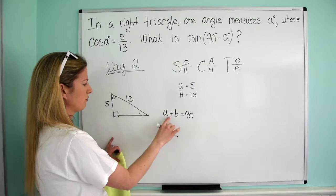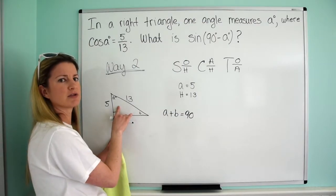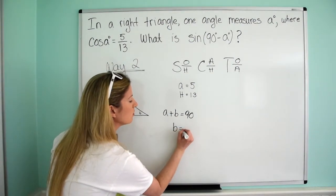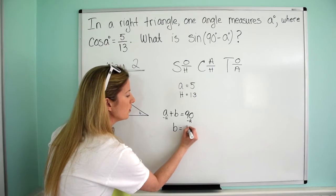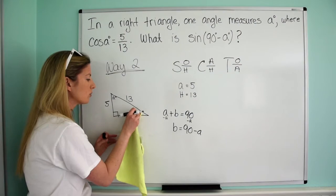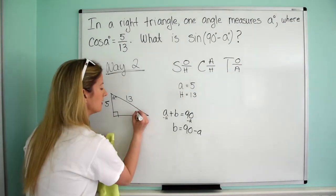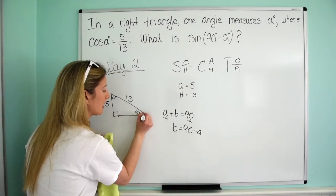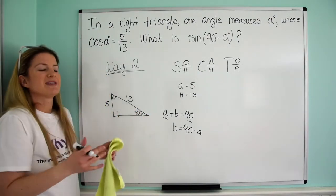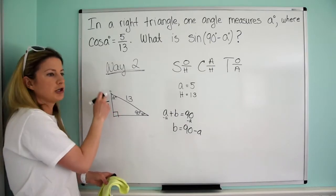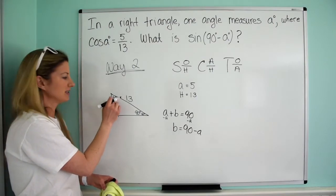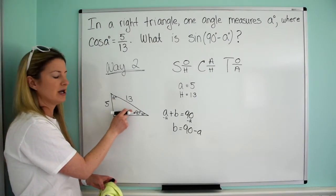Now, if we want to write what is B in terms of A, because remember, we can't use another variable, we can write B in terms of A. We can say B equals, well, if we subtract A from both sides, we get B equals 90 minus A. So we don't have to write B anymore. We can write 90 minus A. Now, just think about it. Anytime you have a triangle, if one angle is X or Q or Z, the other one is just going to be 90 minus that angle because they're always going to sum to 90.